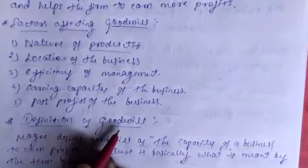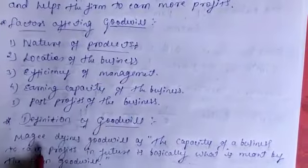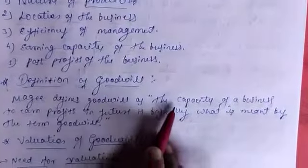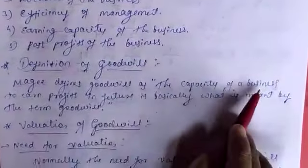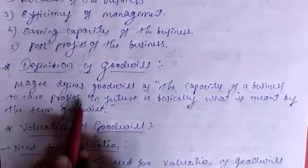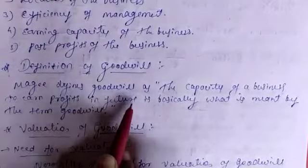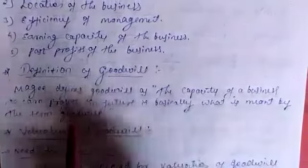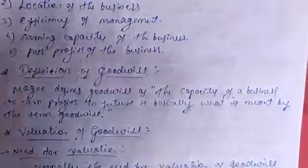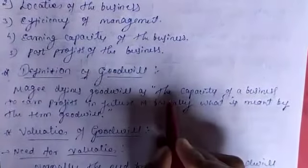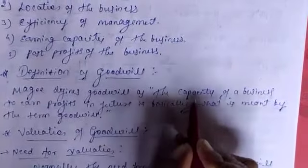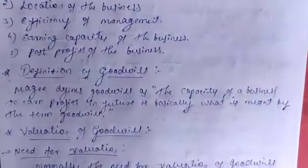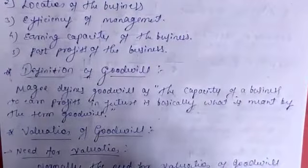Next, the definition of goodwill. Magi defines goodwill as the capacity of the business to earn more profit in the future. That is basically what is meant by the term goodwill — the capacity of the business to earn more profit in the future days.